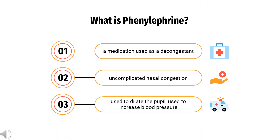Phenylephrine is a medication used as a decongestant for uncomplicated nasal congestion, used to dilate the pupil, used to increase blood pressure, and used to relieve hemorrhoids. It is a selective alpha-adrenergic receptor agonist with minimal to no beta-adrenergic activity.